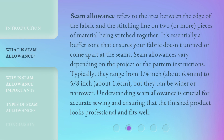Seam allowance refers to the area between the edge of the fabric and the stitching line on two or more pieces of material being stitched together. It's essentially a buffer zone that ensures your fabric doesn't unravel or come apart at the seams. Seam allowances vary depending on the project or the pattern instructions.